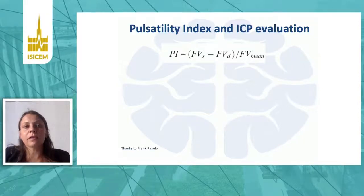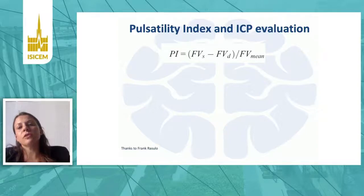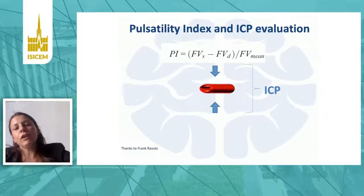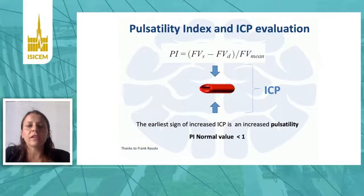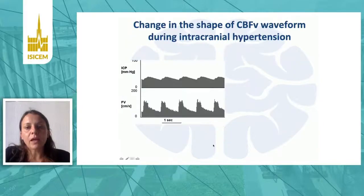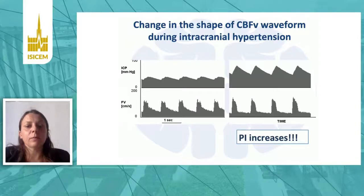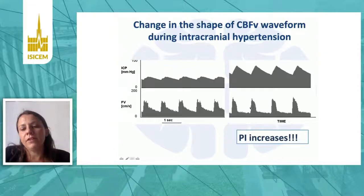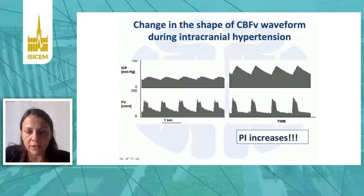One method to assess ICP is the pulsatility index (PI). When intracranial pressure increases, there is a decrease in diastolic flow velocity, causing an increase in the differential between systolic and diastolic flow velocity, resulting in an elevated pulsatility index. If you become expert enough, you can actually visualize the problem: in a patient with normal ICP the flow velocity waveform looks normal, whereas with increased ICP the waveform shape changes — the differential between systolic and diastolic flow is much higher.